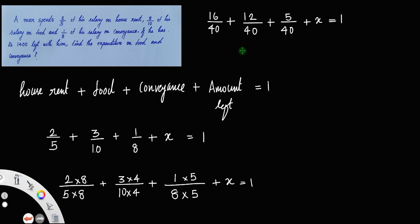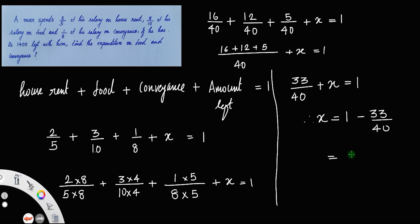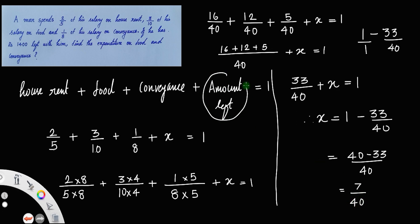Since the denominators are the same, we can combine: (16 + 12 + 5 + x) / 40 = 1, which gives 33/40 + x = 1. Therefore x = 1 − 33/40 = (40 − 33)/40 = 7/40. So the fraction of the amount left is 7/40.